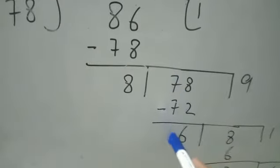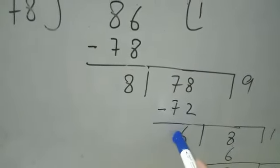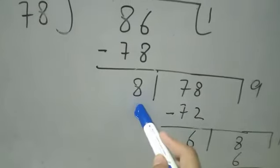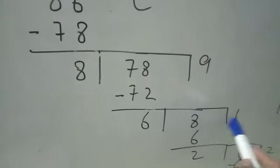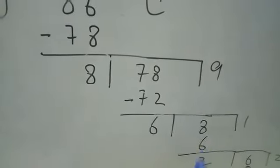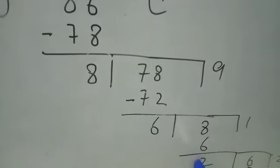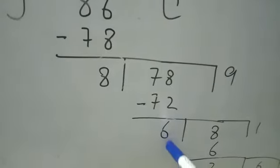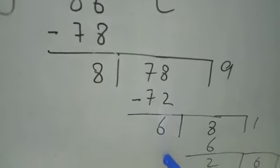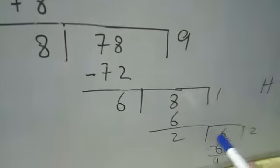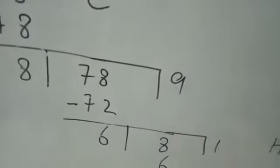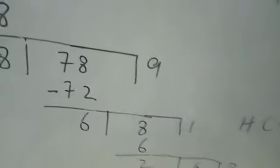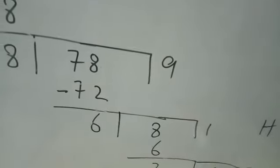78 minus 72 gives 6. Now 6 becomes the divisor of 8. 8 goes inside: 6 ones are 6, and 8 minus 6 gives 2. Now 2 becomes the divisor of 6. 6 goes inside: 2 threes are 6, and 6 minus 6 gives 0.